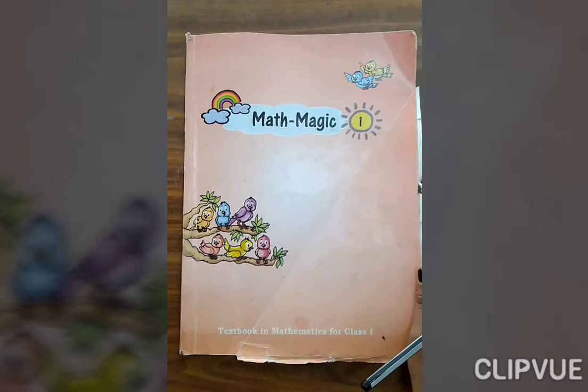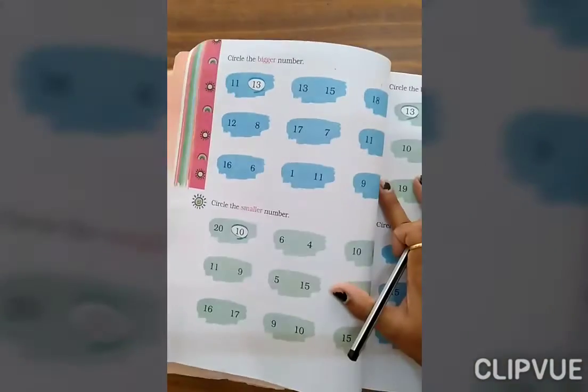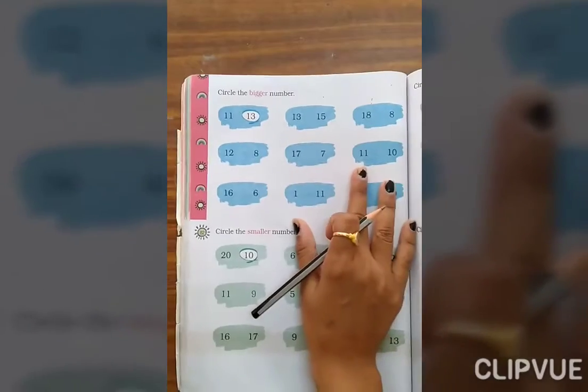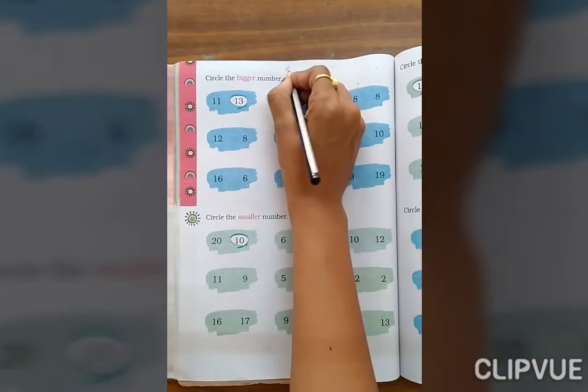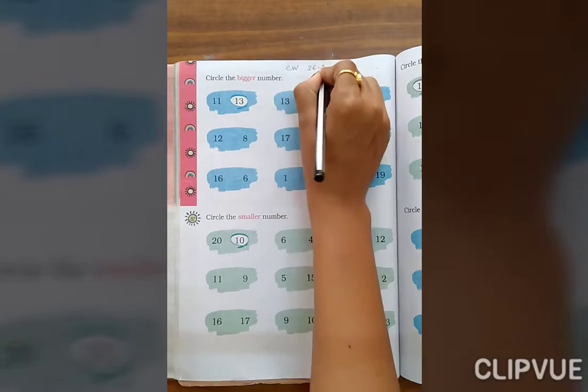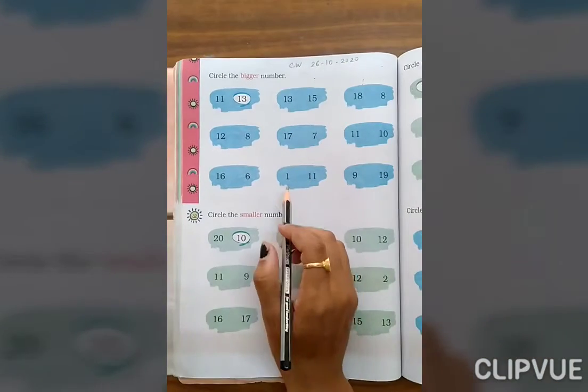Hello students, I am here for grade 1. Take out your math textbook and open to page number 82, 82. Write down today's date, NCW, today's date 26th October 2020. Okay, now look at here.